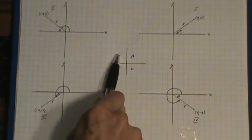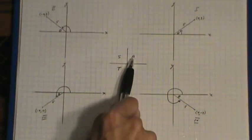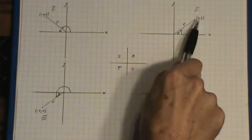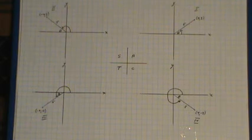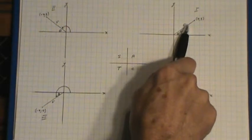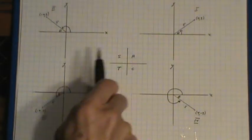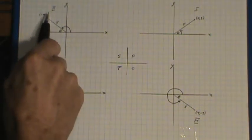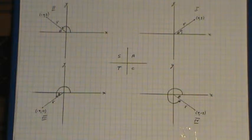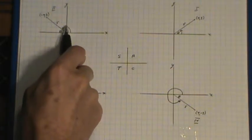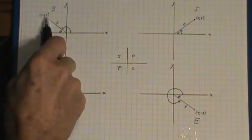The word CAST written in here, the A refers to the fact that all trig ratios are positive when the terminal arm resides in the first quadrant. The S stands for sine because only the sine is positive when the angle has a terminal arm in the second quadrant.